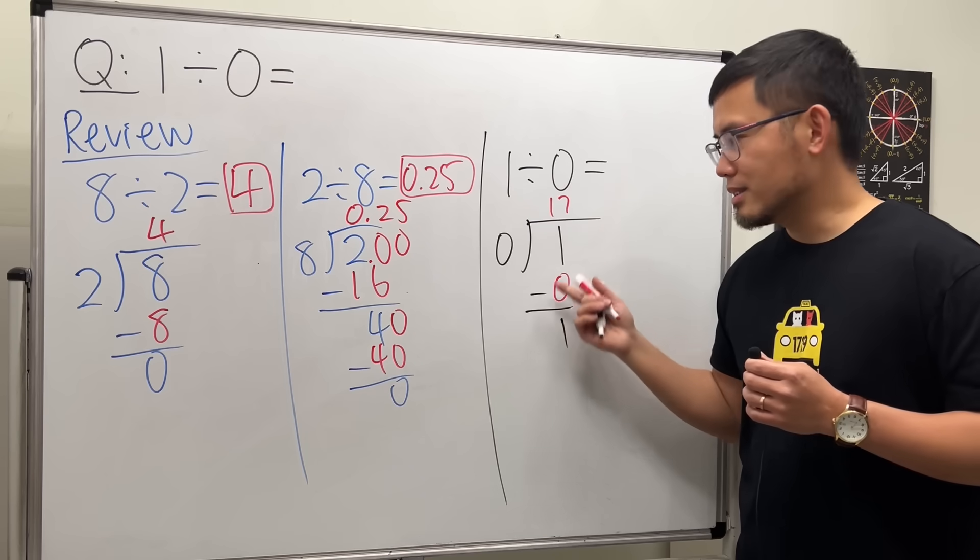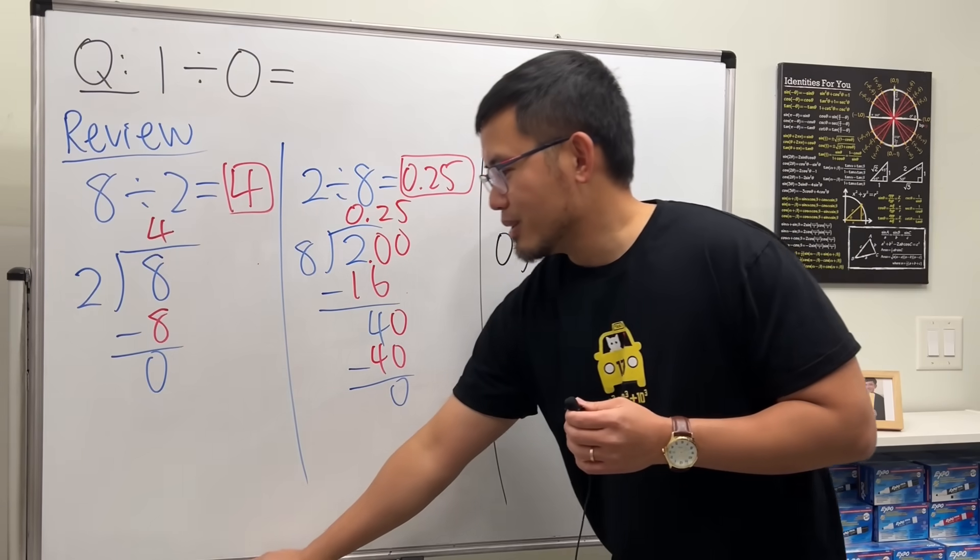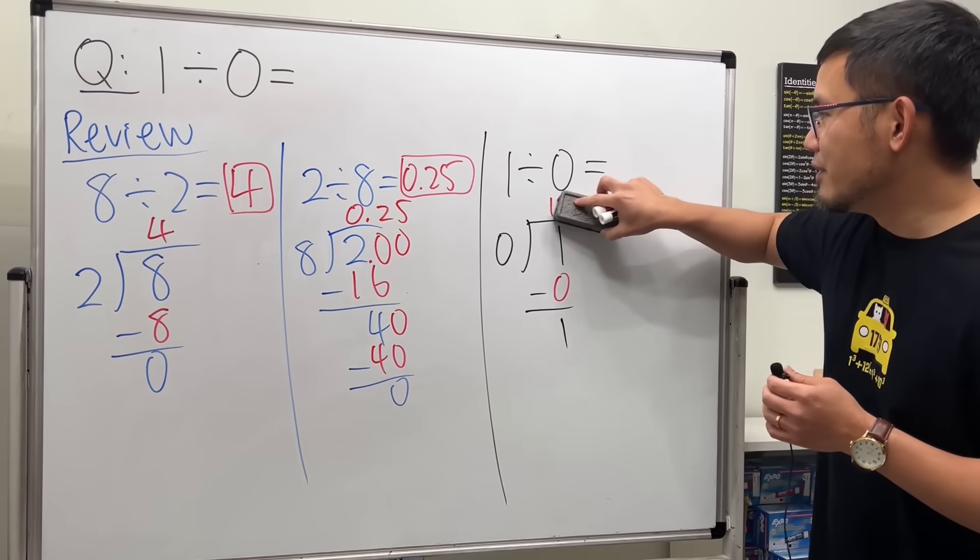It's still 1. That's this. We didn't do anything, right? So, because of this, you see that 17 is not the answer.